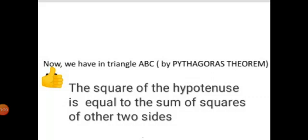Now we have in triangle ABC by Pythagoras theorem, the square of the hypotenuse is equal to the sum of squares of other two sides.